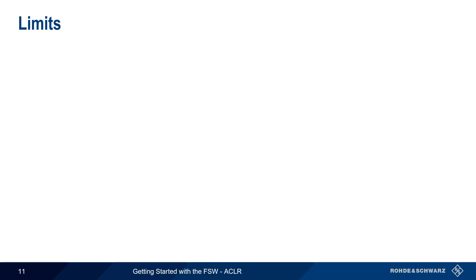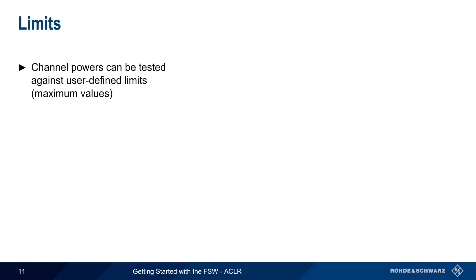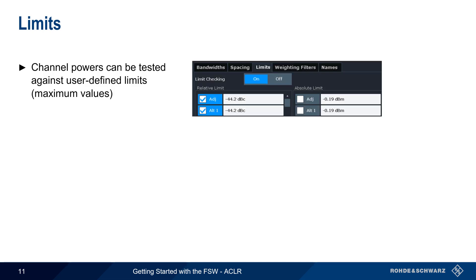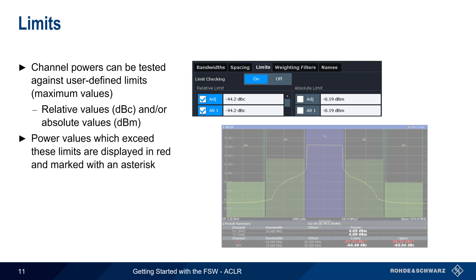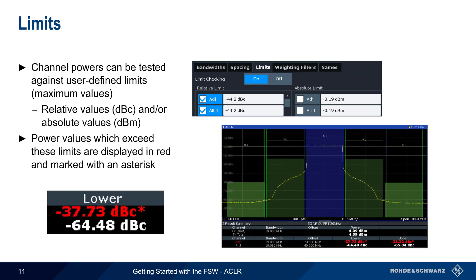Channel powers can also be tested against user-defined limits — that is, against maximum power values. This is configured under the Limits tab, and these limits can be specified as either relative powers in dBc or absolute powers in dBm. If the measured channel power exceeds the limit, the value is displayed in red and marked with an asterisk.